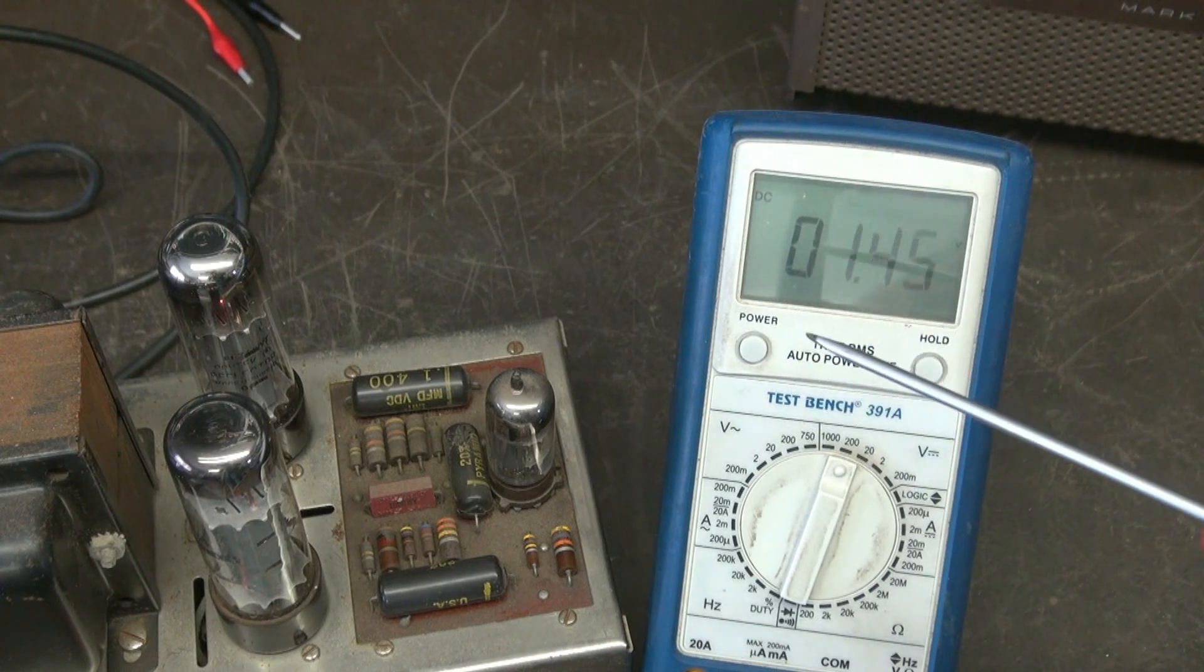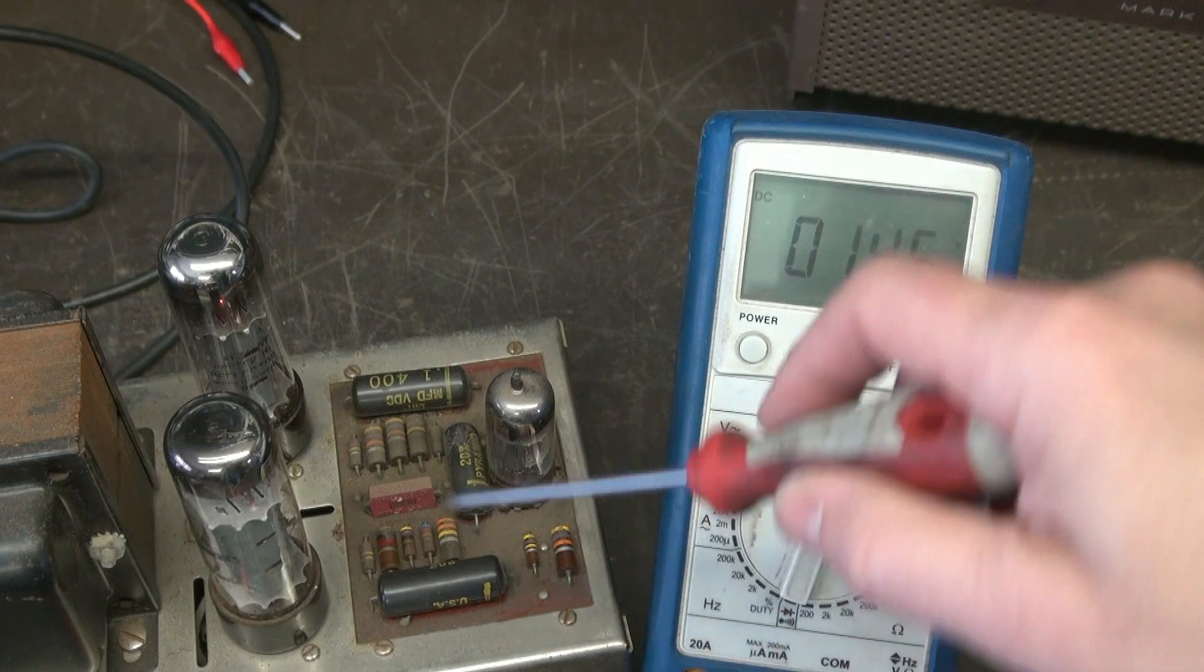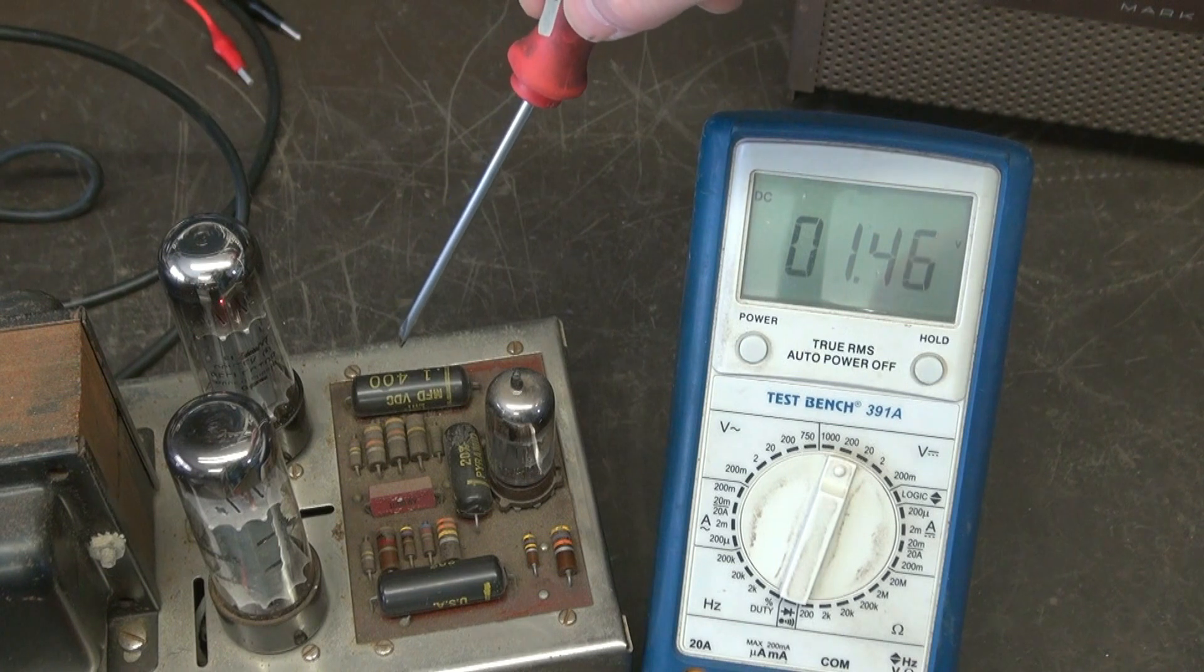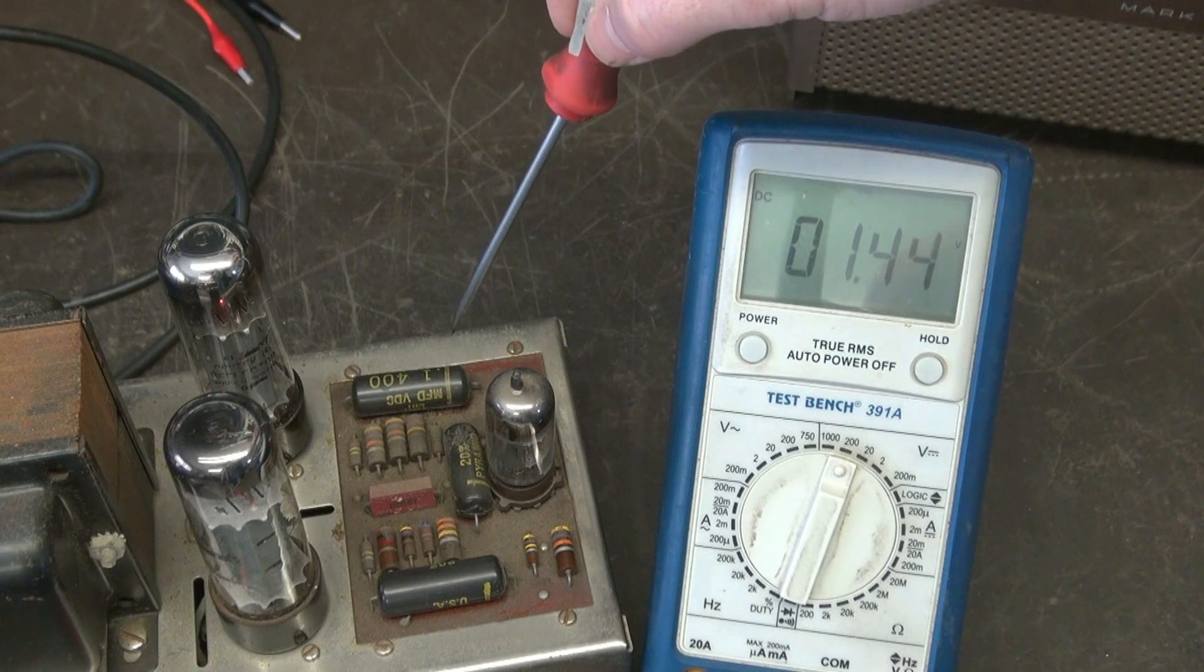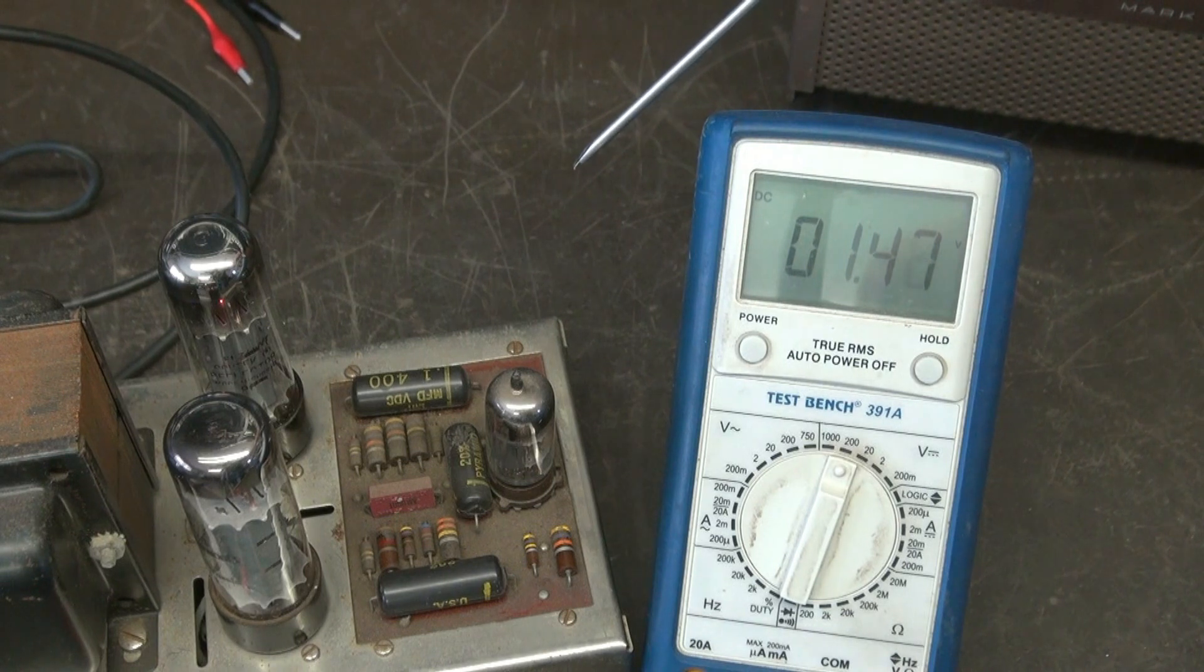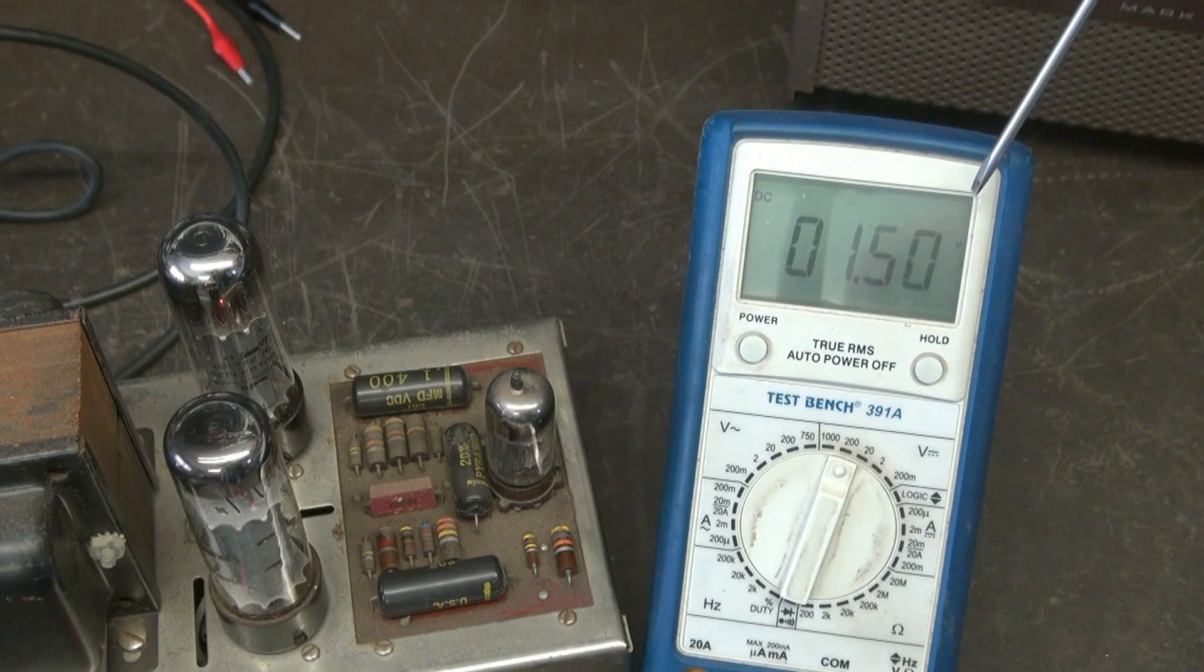That's a sure sign that these caps, those black beauties, are leaking and throwing the bias off to the tubes. So I routinely change these out. But I wanted to show you the symptoms before I did it. So you can see we're still going up.